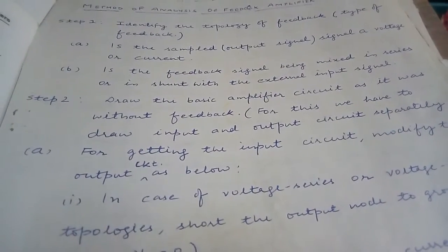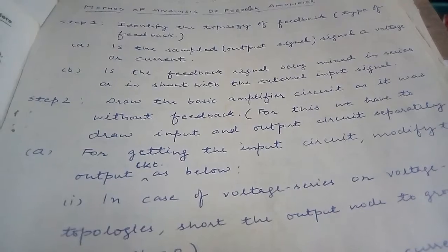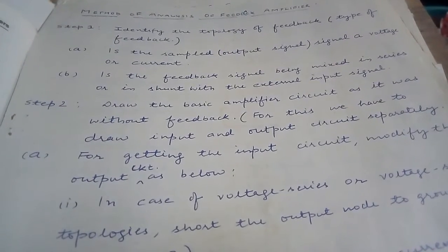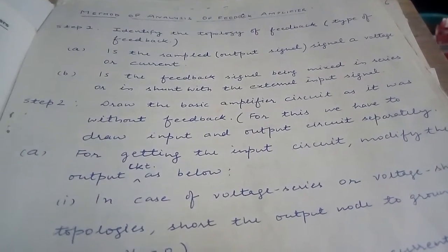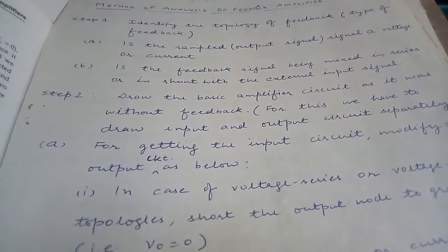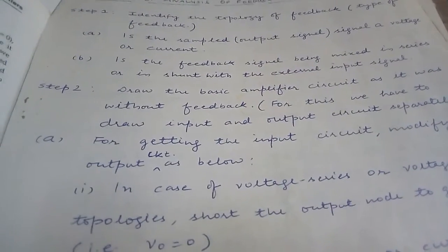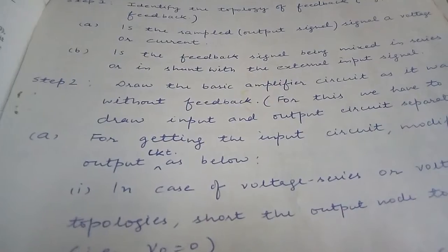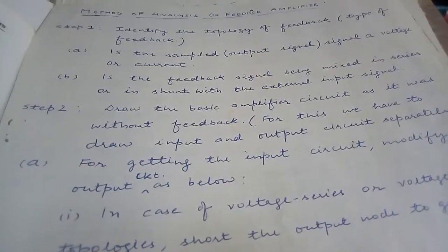As we know there are four topologies. Your given circuit will be from one of these topologies. The four topologies of feedback amplifiers are: voltage series, voltage shunt, current series, and current shunt. We have to first identify the topology because we have developed the theory for each one. If we can identify the topology, we can easily analyze the circuit using the theory developed in our previous classes.